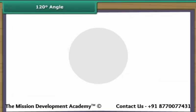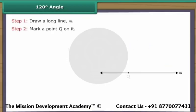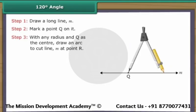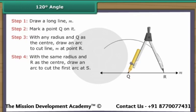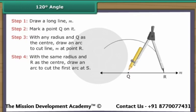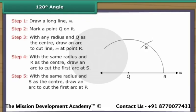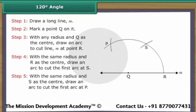Construction of 120 degree angle. Draw a long line M and mark a point Q on it. With any radius and Q as the center, draw an arc to cut line M at point R. With the same radius and R as the center, draw an arc to cut the first arc at S. With the same radius and S as the center, draw an arc to cut the first arc at P. Join P to Q. Angle PQR is formed, which measures 120 degrees.